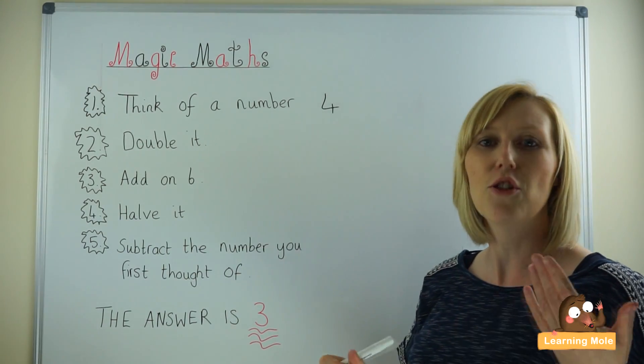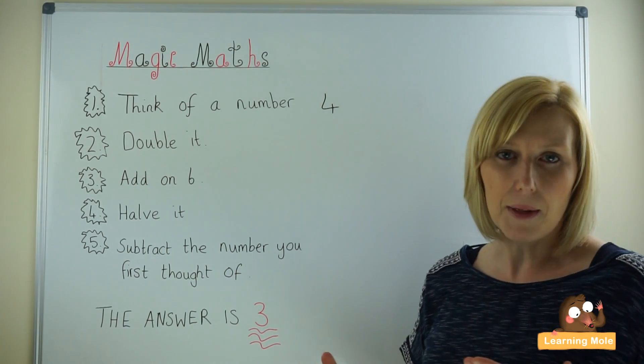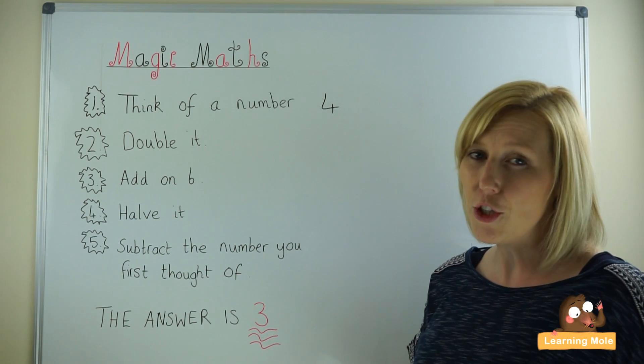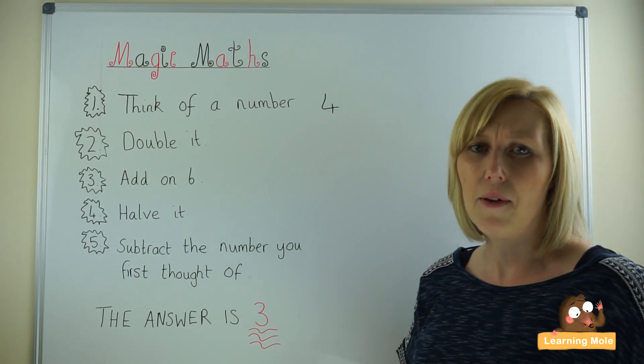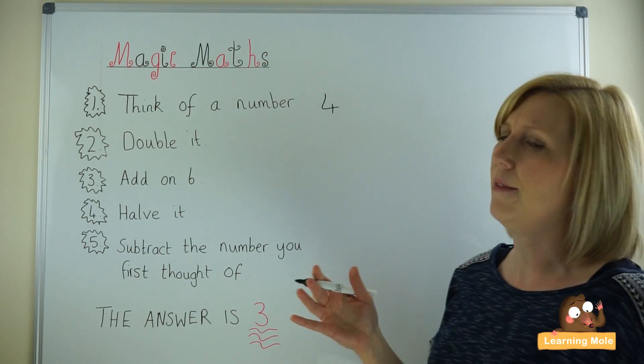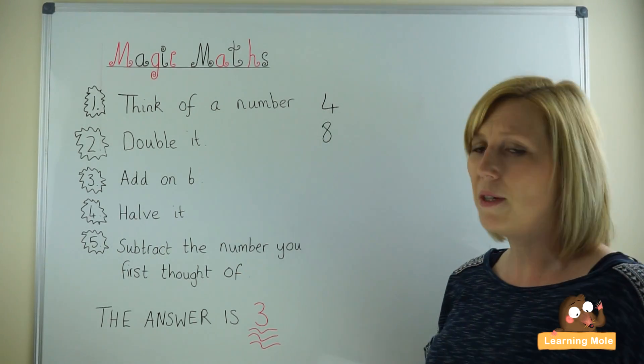Now you're going to ask your child to double it. If they're not sure about doubling just explain to them that doubling is the same as 4 plus 4. It's the same as timesing by 2 and actually give them all that information. Give them all that vocabulary and actually get them to repeat it back to you and use that vocabulary. So you're doubling it. So you're doing 4 plus 4 which is 8. So we're now at 8.